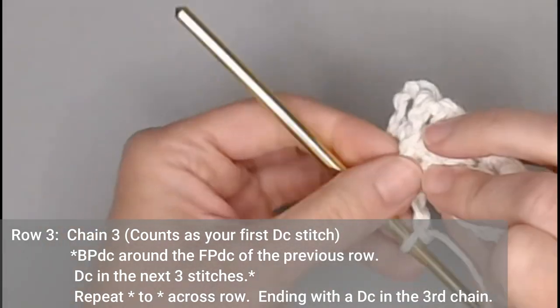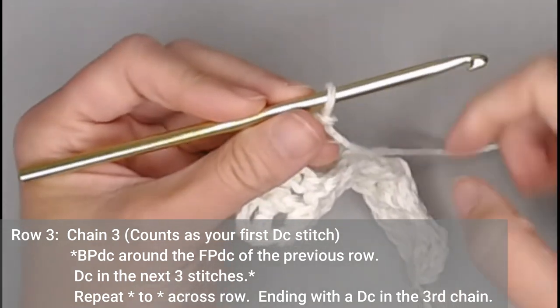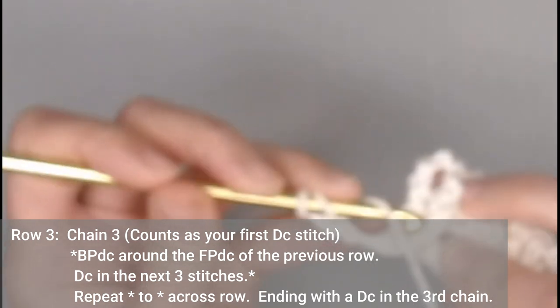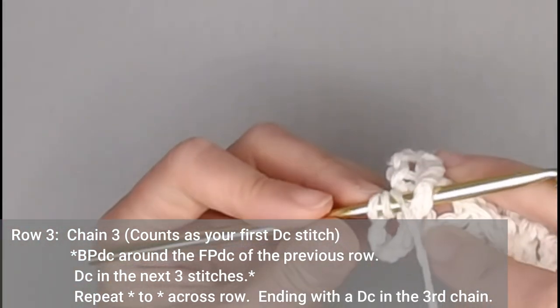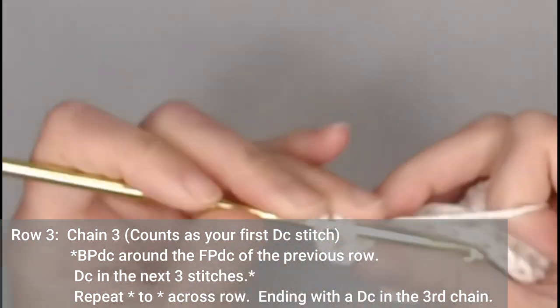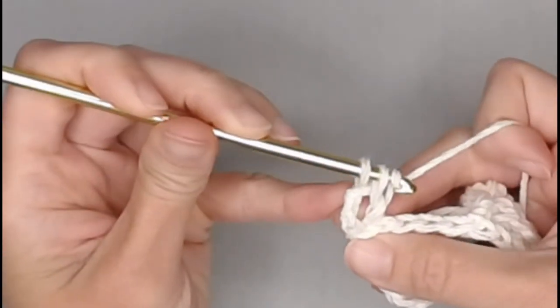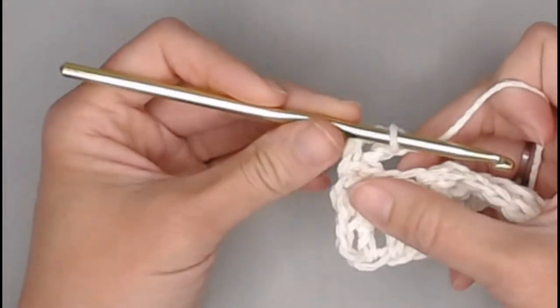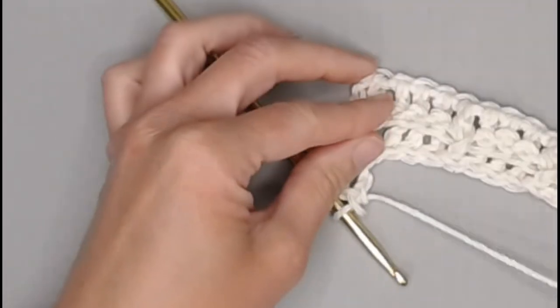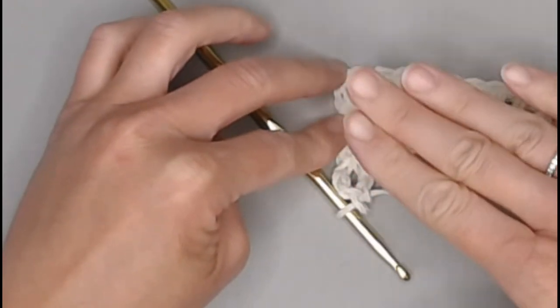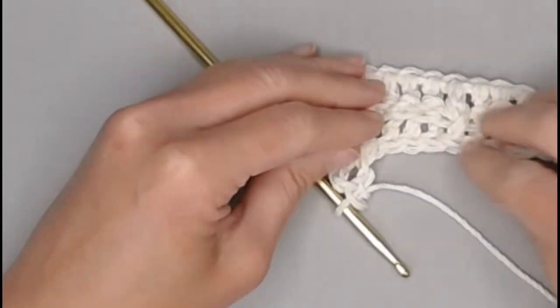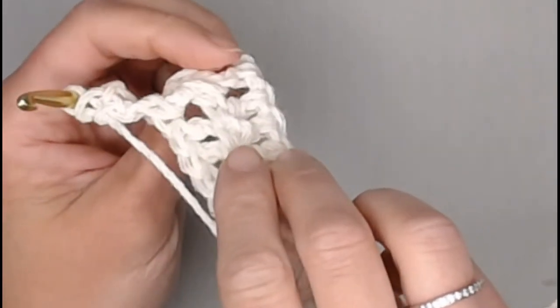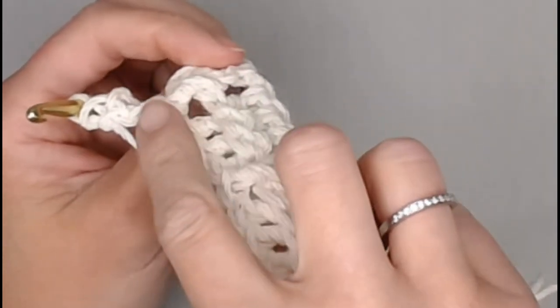Back post double crochet around the front post of the previous row. So, come through. See the pronounced stitch? Just go behind it. Yarn over, pull through. Yarn over, pull through two. Yarn over, pull through two. We want to back post double crochet here, because we want all the posts to stay on one side of this creation. You'll notice that all the texture will be on one side. There we go. Continuing this line all the way up.